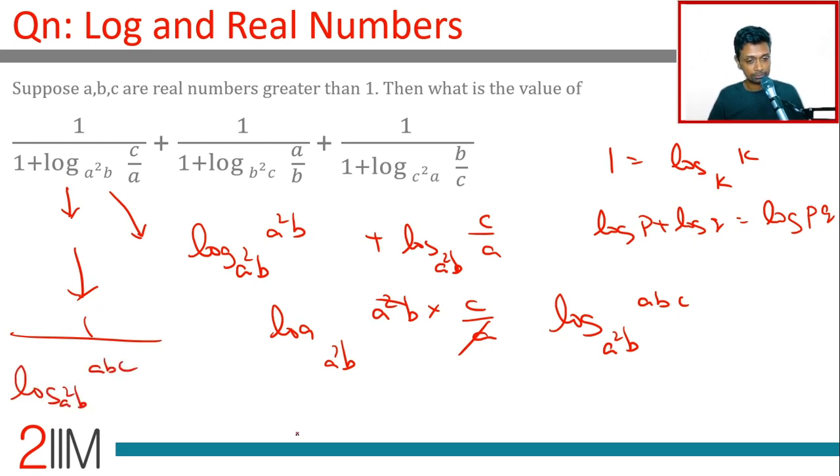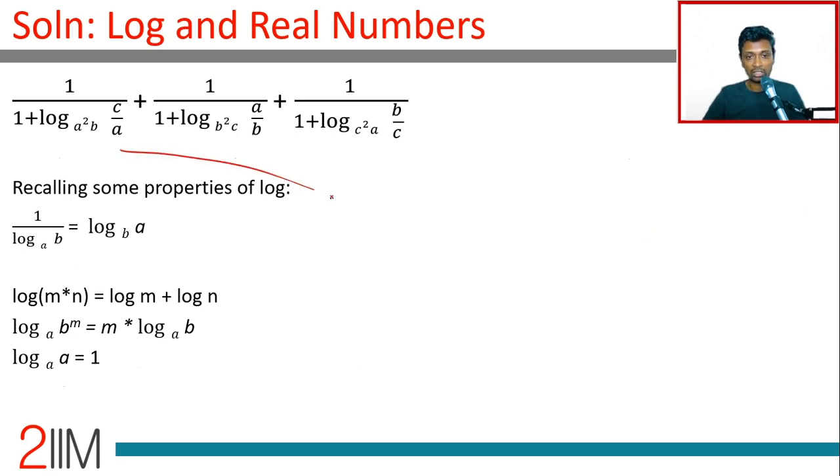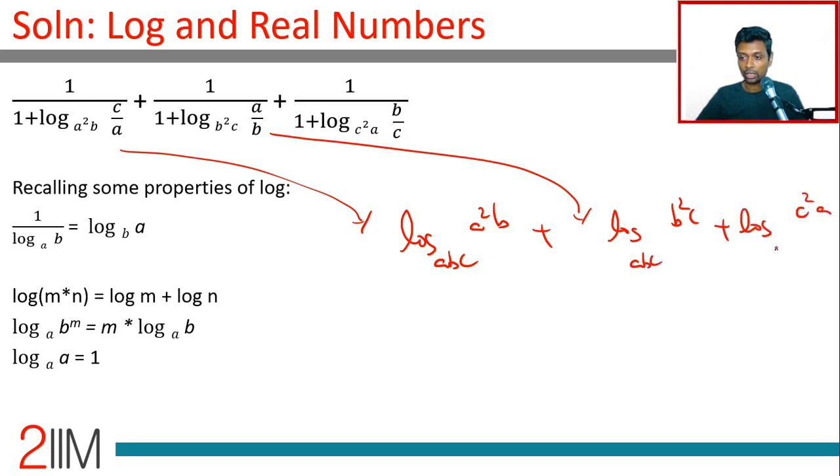So this first term is 1 by log of abc to the base a²b, which is nothing but log a²b to the base abc. That's it, we are through. So we can write this as log a²b to the base abc, and this will be plus log b²c to the base abc.